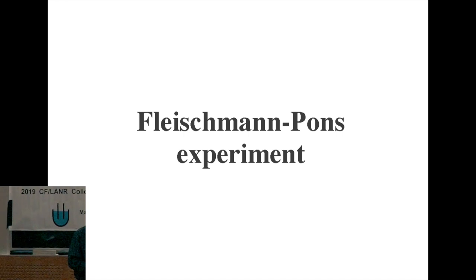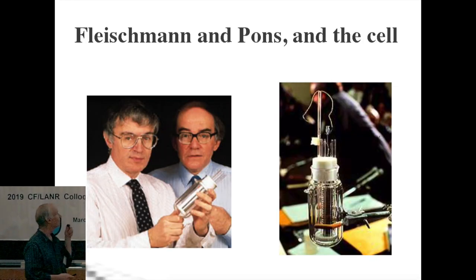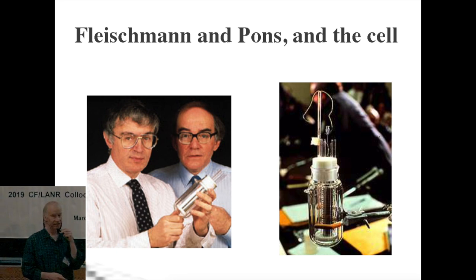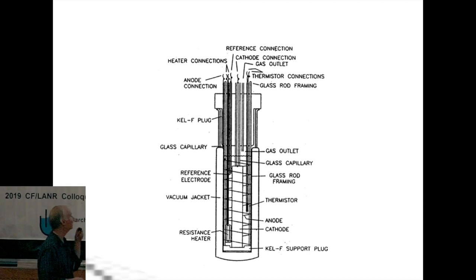We start with the Fleischmann-Pons experiment. Here's Fleischmann, here's Pons, and here's the cell. It looks like this. It's palladium cathode in heavy water and lithium deuteroxide, 0.1 molar.